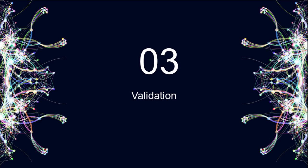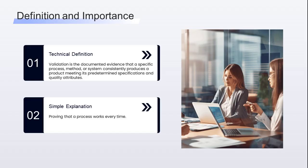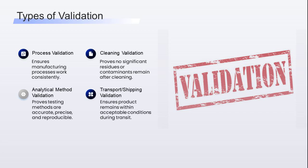Now let's move on to validation. Technical definition: validation is the documented evidence that a specific process, method, or system consistently produces a product meeting its predetermined specifications and quality attributes. Simply, we are proving that the process works every time. Here are the types of validation: process validation ensures that manufacturing processes like mixing, granulation, and filling work consistently. Cleaning validation proves that after cleaning, no significant residues or contaminants remain. Analytical method validation proves that testing methods are accurate, precise, and reproducible.